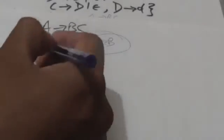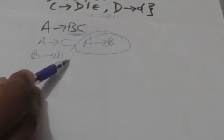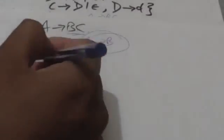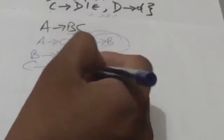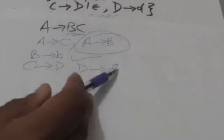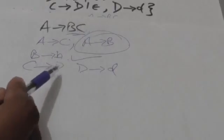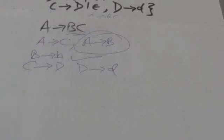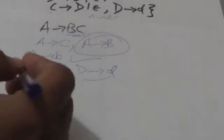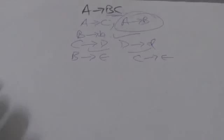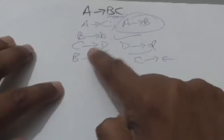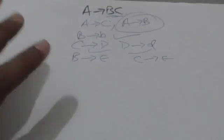Next, consider B → B. The right-hand side contains no nullable variable, so it is added as-is to set P2. Similarly, the productions C → DC and D → D have no nullable variables on the right-hand side, so they are also added as-is to set P2. The productions B → empty string and C → empty string are empty productions, so they will not be added to set P2.